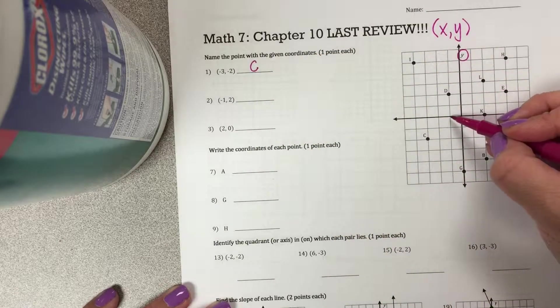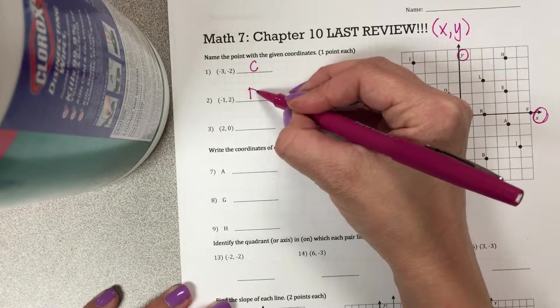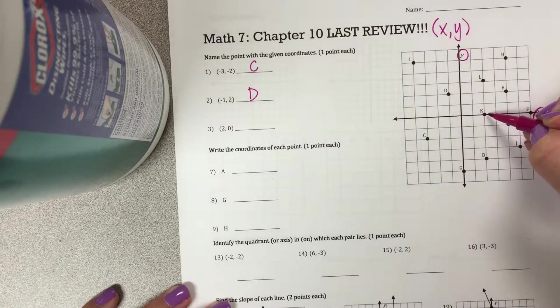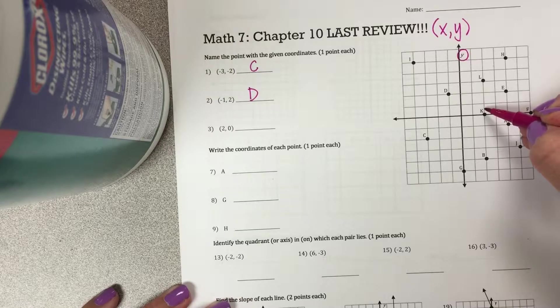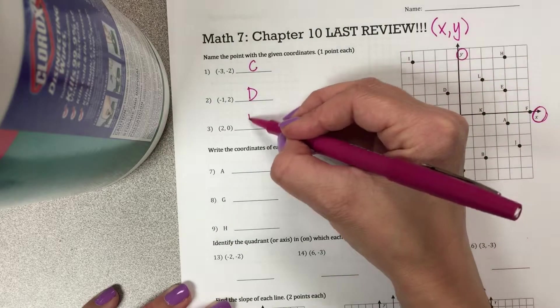Number 2, negative 1, positive 2 is D. And then over 2, and then on our Y-axis we didn't change at all, it was 0, so that's K.